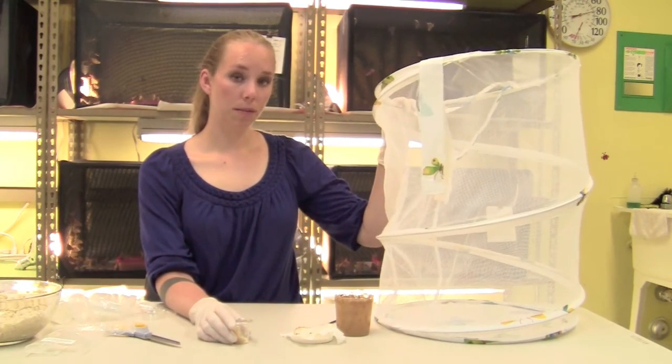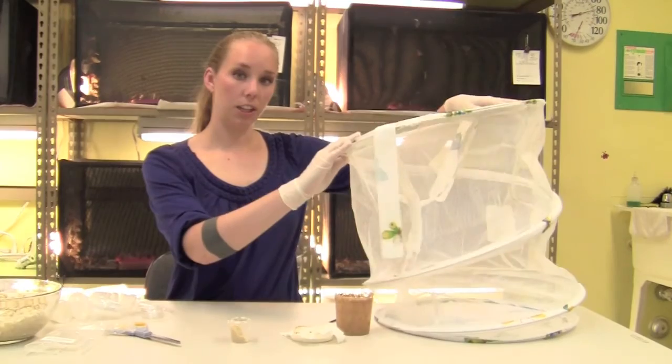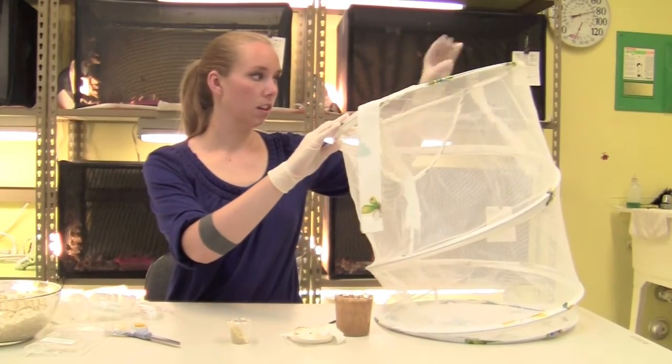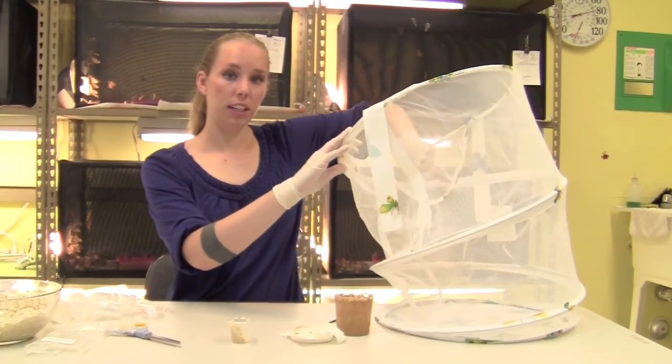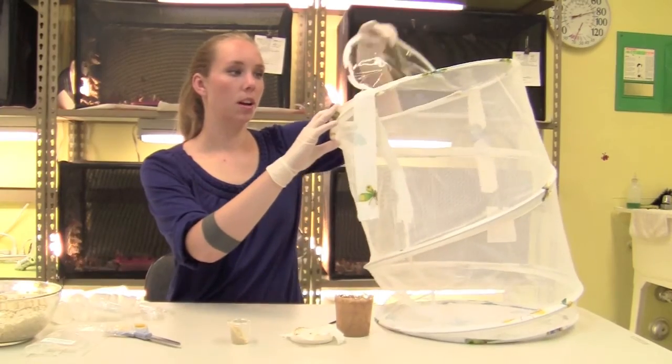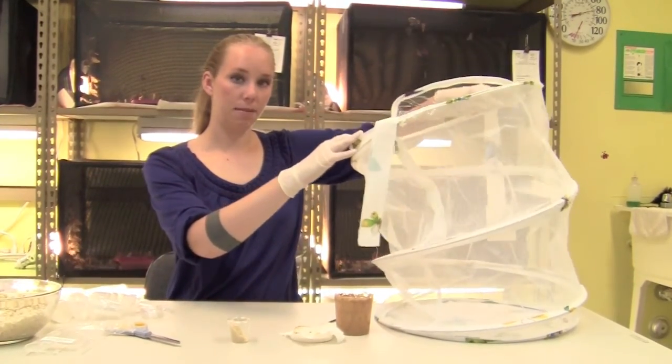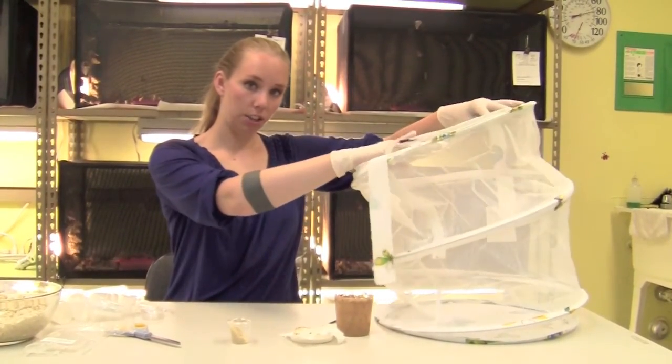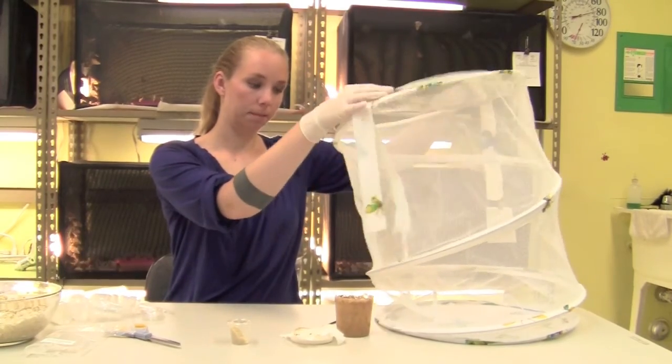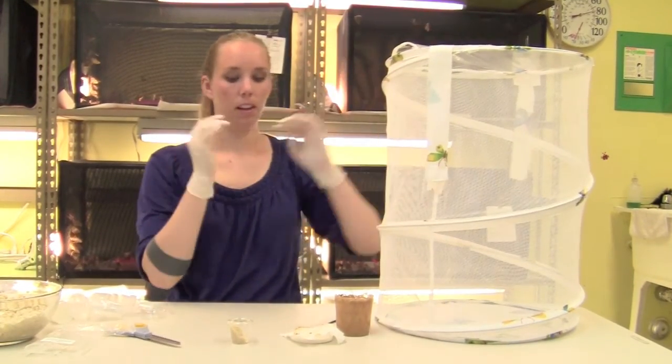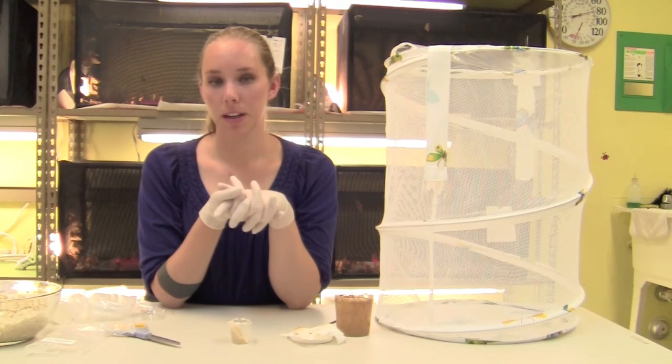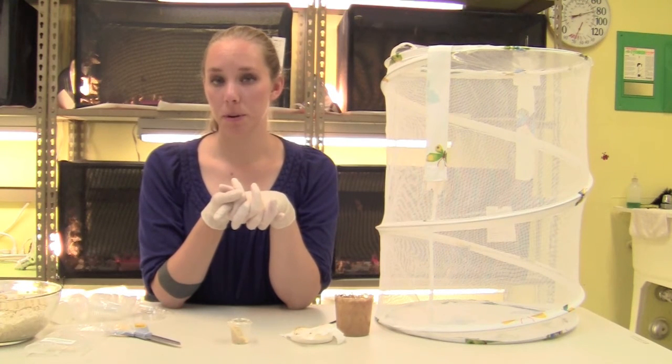When you've given the chrysalids 24 hours, you can then put them inside your cage. You'll want to remove the lid from the top of the cup and tape it to the inside of your cage. The top of the cage is a good place to tape it since it's plastic. After you've done that, it'll be another week before the chrysalids emerge as butterflies.